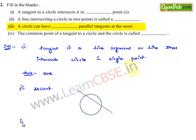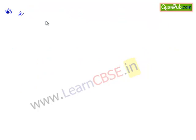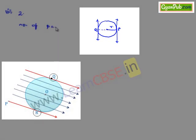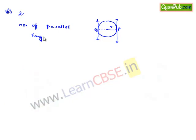Moving on to the third blank: a circle can have parallel tangents at most — the answer is 2. If we consider a circle with radius r and draw a tangent passing through the point of contact p, a parallel tangent can be drawn at a distance equal to the diameter only, because a tangent drawn at any other point will be at some angle of inclination to the first tangent. Therefore, the number of parallel tangents that can be drawn at most to the circle is 2.